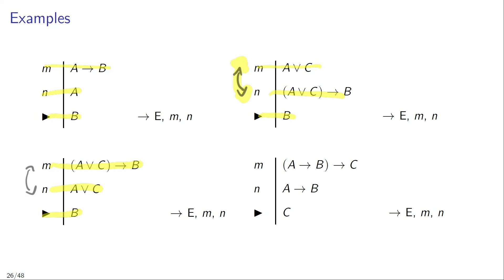To look at our fourth and final example: suppose that in line M of your proof you have a conditional whose antecedent is itself a conditional — specifically, if A then B, then C. And suppose that in a later line N of your proof you have the antecedent of this conditional, if A then B, which is itself a conditional. You can then infer the consequent C and justify this inference by citing conditional elimination applied to lines M and N.